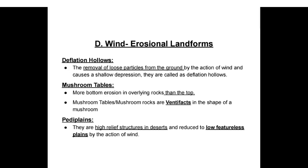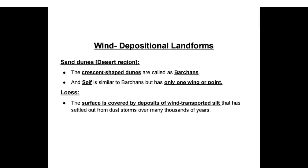Wind erosional landforms: deflation hollows are shallow depressions caused by removal of loose particles by wind. Mushroom tables (mushroom rocks or ventifacts) form due to more bottom erosion in the overlying rocks than at the top, shaped like a mushroom. Pediplanes are high-relief structures in deserts reduced to low featureless planes by wind action. Wind depositional landforms: sand dunes in desert regions — crescent-shaped dunes are called barchans; seif is similar to barchans but has only one wing or point. Loess is a surface covered by deposits of wind-transported silt settled out from dust storms over thousands of years.